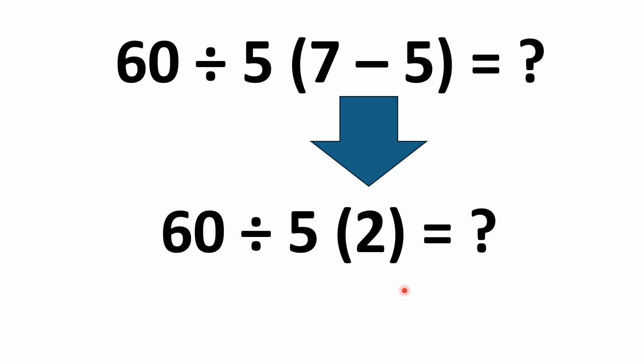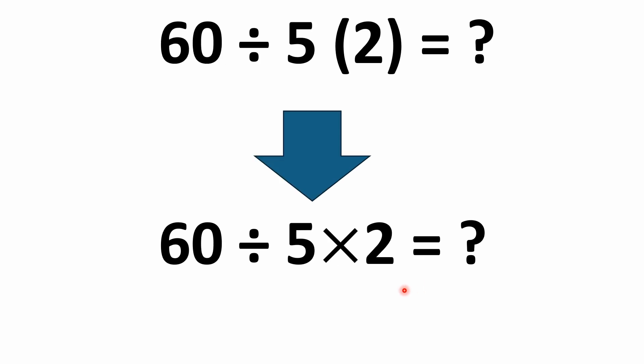This is where things start to get squirrely and where the debates start. Looking at the modern interpretation of how PEMDAS and BODMAS work, a lot of people talk about needing to 'clear the parentheses.' The way modern interpretations work, clearing the parentheses basically means taking this implicit multiplication and making it explicit. So in that case, you have 60 divided by 5 times 2.